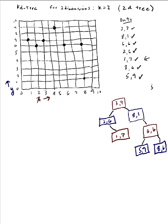Now let's search for (5,2), which is not in the tree. 5 is greater than 3 so I go right; 2 is greater than 1 so I go right; 5 is less than 6 so I go left; 2 is less than 9 so I look left and find null. So (5,2) does not appear in the tree.